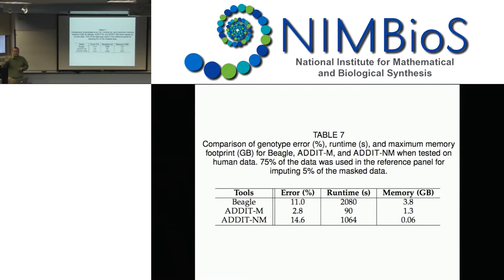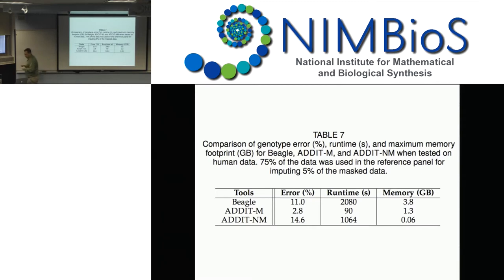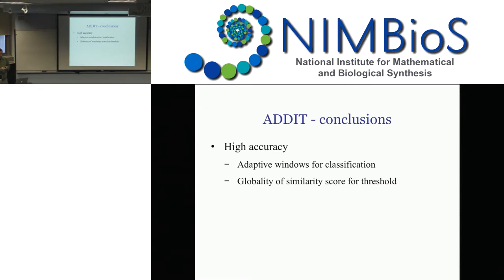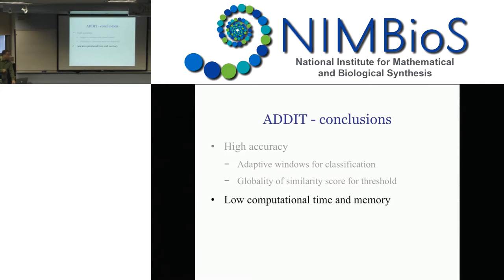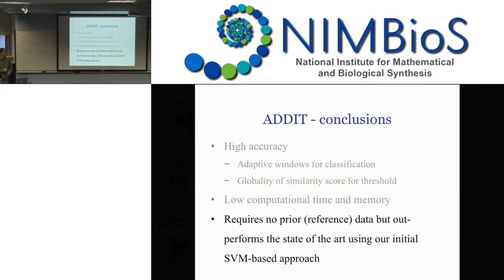What if we try our old methods? We used to call the previous methods — now called Addit-NM — and it's way worse. When you apply the simple method on outcrossers, it's super bad — don't do it. But when you apply the SVM method with training data, you do better. We're still relying upon having available data, but we have data available for human, and you can actually get much better performance with this SVM model. There are other ways of doing this — this is something we did literally in two weeks before it was due. The runtime includes the time it takes to do the training sets.